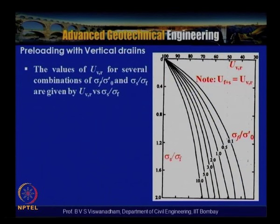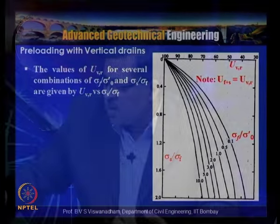Revisiting the previous example problem solved with preloading only — where the required fill was about 207 kPa, indicating a very high embankment causing potential stability issues — we now examine the same problem with the provision of vertical drains to understand the efficacy of drains in accelerating consolidation and reducing the required preloading height.